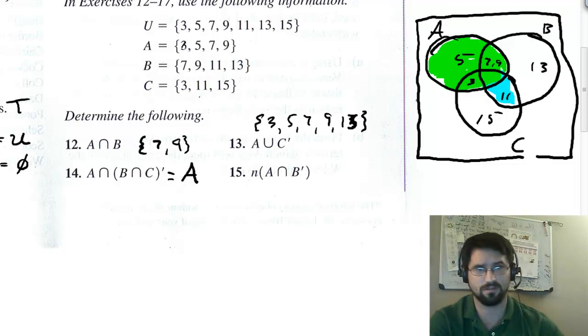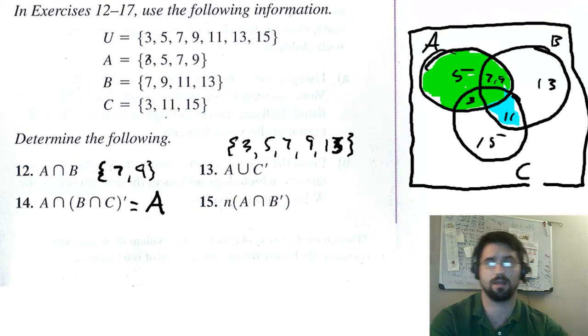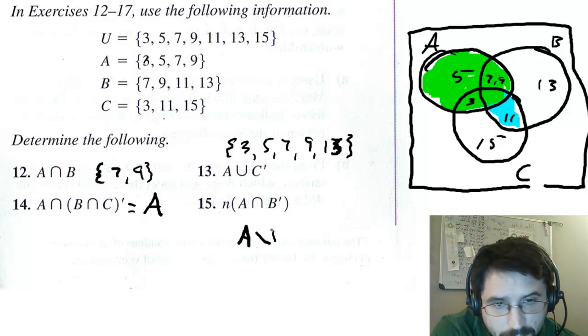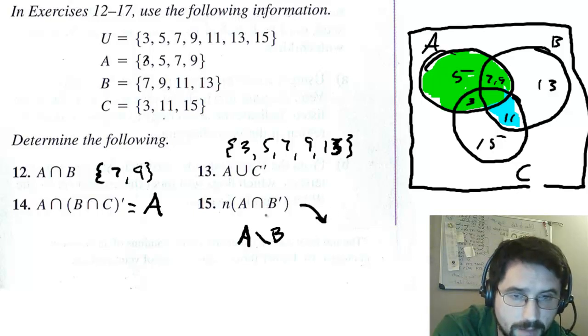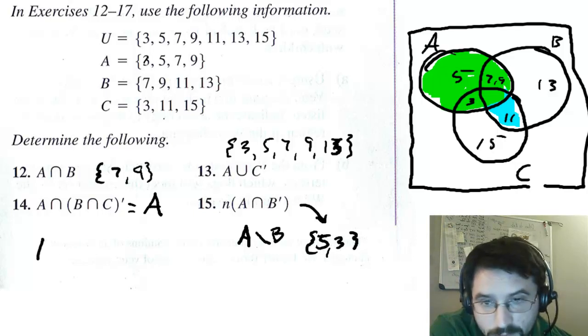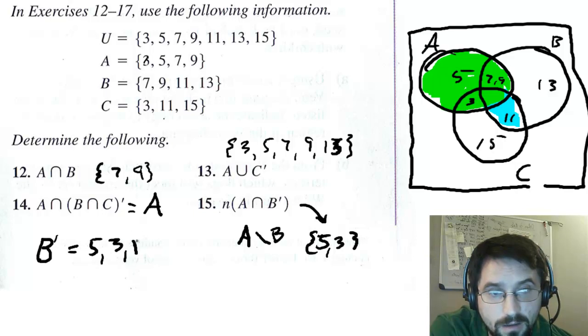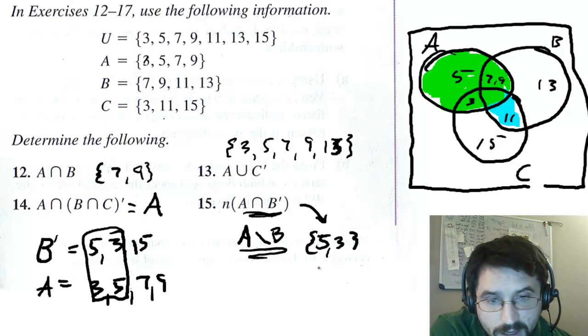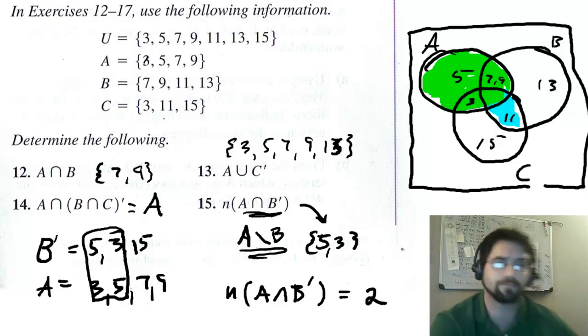Alright. And lastly, the question on this page is, what is the cardinality of A intersect B complement? A intersect B complement. Basically, this is the same as A minus B, if you think about it. Because what is this saying? This is how many, the cardinality, how many things are in A and not in B? So what's in A that's not in B? 5 and 3. Now if you want to break it down step by step, this is what you do. You figure out B complement. B complement is 5, 3, and 15, right? And we're going to intersect that with A, which is 3, 5, 7, and 9. What do they have in common? The 3 and the 5. So this in here is 3, 5, which is the same thing I got this way. And what is the cardinality of a set containing 3 and 5? The answer is, n of A intersect B complement is 2. So that's that one.